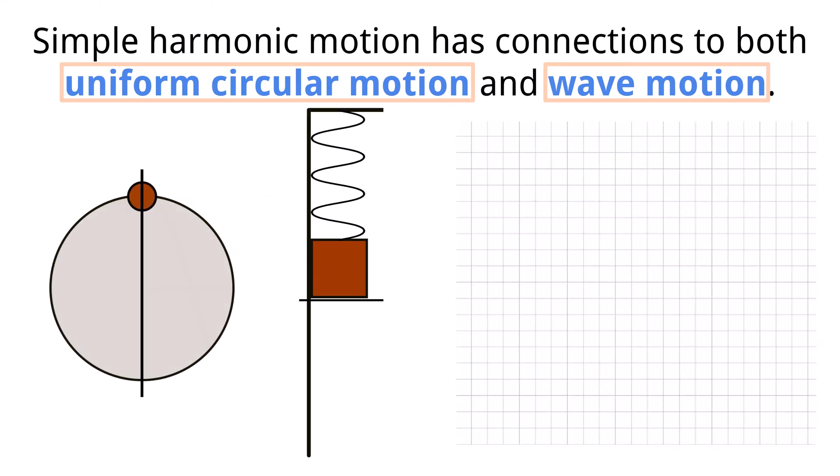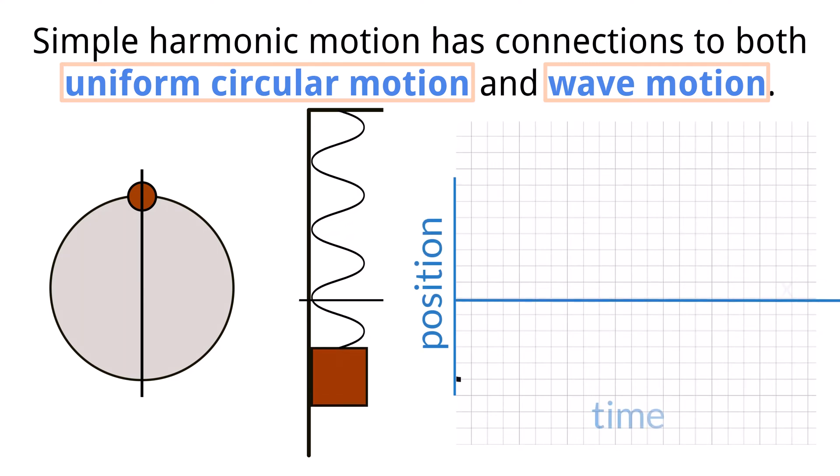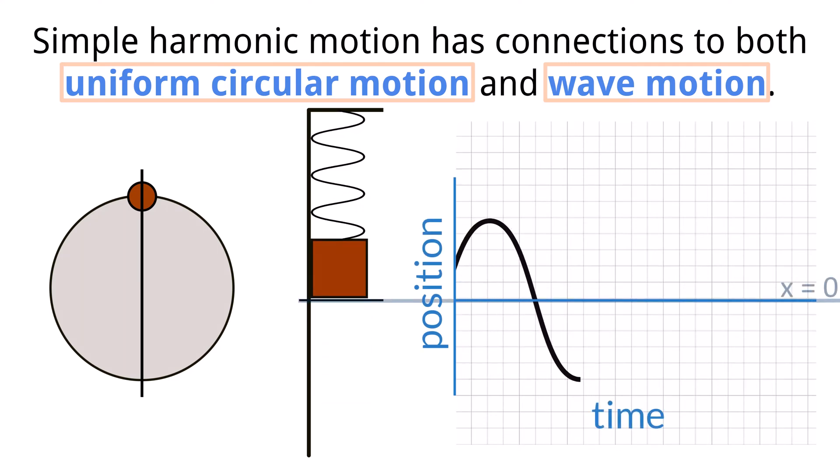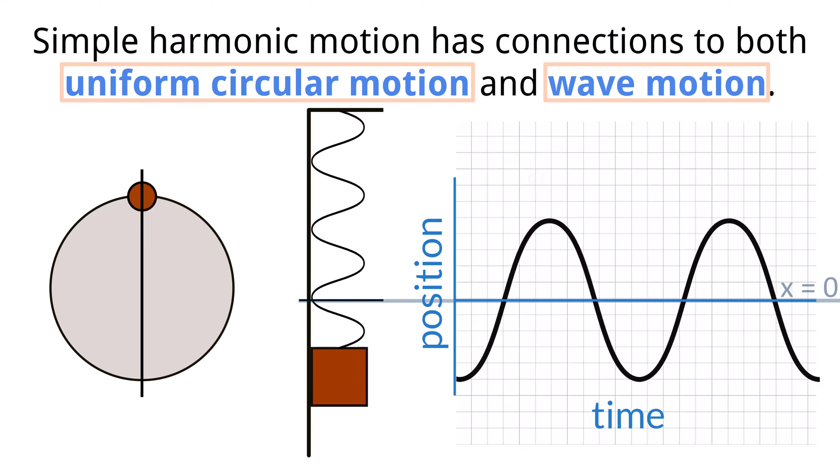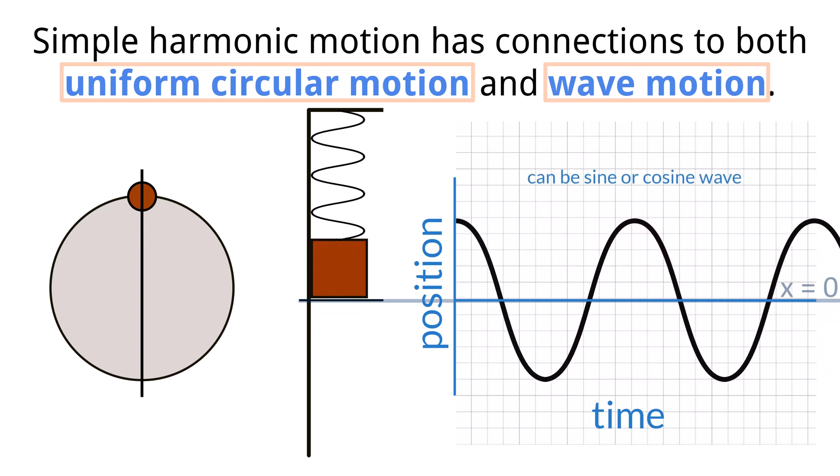Continue to look at the mass spring oscillator. If we were to plot the position of the object with respect to time and trace it out on a graph, it will produce a sinusoidal graph. The graph of the motion can be either a sine or cosine wave depending on where the object is in its motion when the time starts.